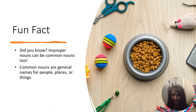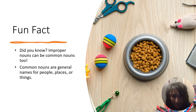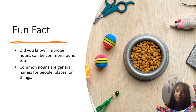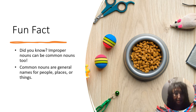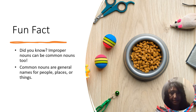We've talked about this a little bit in the last slides. Did you know that improper nouns can be common nouns too? That's right — you've probably been thinking this all along: wow, that sounds a lot like a common noun. Common nouns are just general names for people, places, and things.